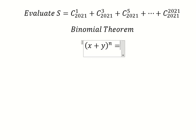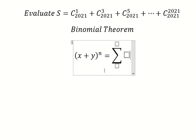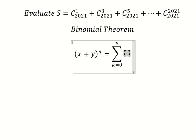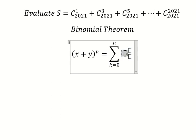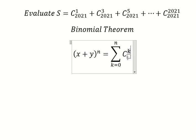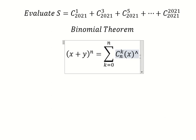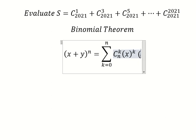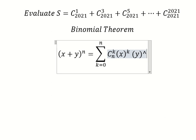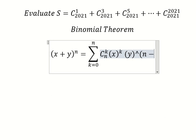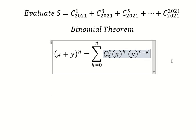In this one, we have the summation from k equals zero to n. The formula includes combination of n choose k, multiplied by s to the power of k, and y to the power of n minus k.